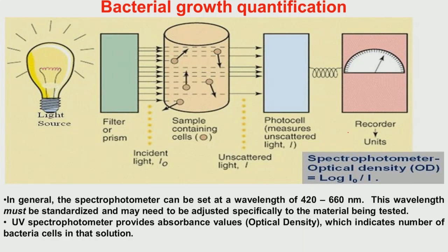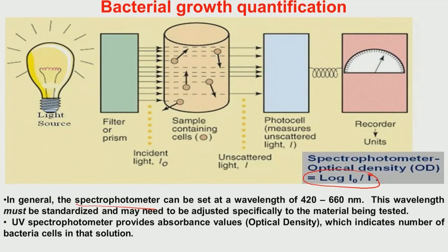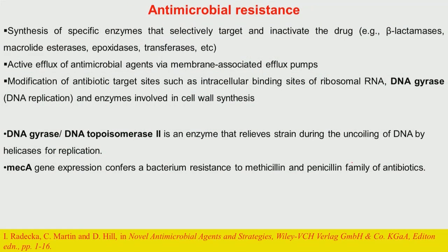To quantify bacterial growth kinetics, one of the most standard methods is spectrophotometry. A light beam of a specific wavelength is passed through the growth medium — once without bacteria (blank) and once with bacteria. The intensity of the transmitted beam is measured in both cases, and optical density is determined as the logarithm of the ratio I₀/I, giving the optical density of the bacterial growth conditions.